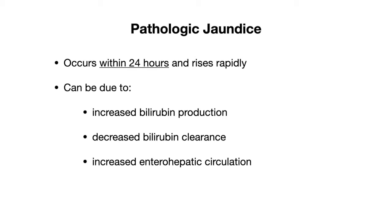Pathologic jaundice occurs within 24 hours and rises very rapidly. Just like physiologic jaundice, pathologic jaundice can be due to one of three reasons: increased bilirubin production, decreased bilirubin clearance, and increased enterohepatic circulation.